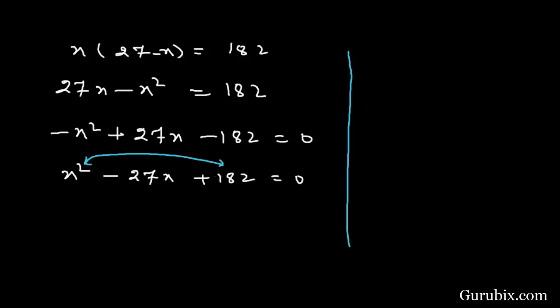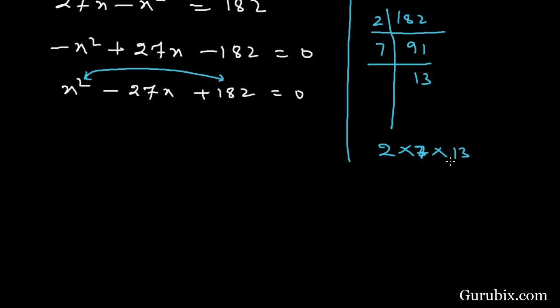If we multiply 182 with x squared, we have 182x squared. Now we shall factorize 182 by using prime factorization method. First we divide it by 2, then we have 91. Then divide by 7, we have 13. So the factors are 2 into 7 into 13.